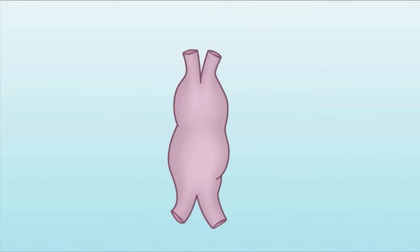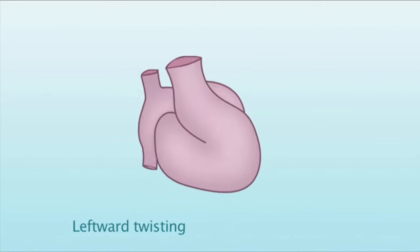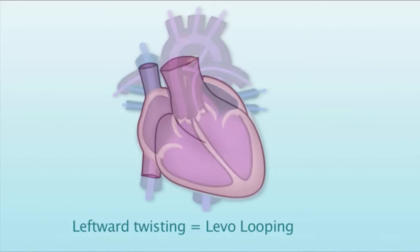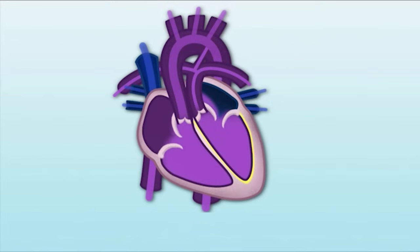Abnormal looping in a leftward direction is called levolooping. This results in the right ventricle developing on the left side of the heart and the left ventricle developing on the right side of the heart.